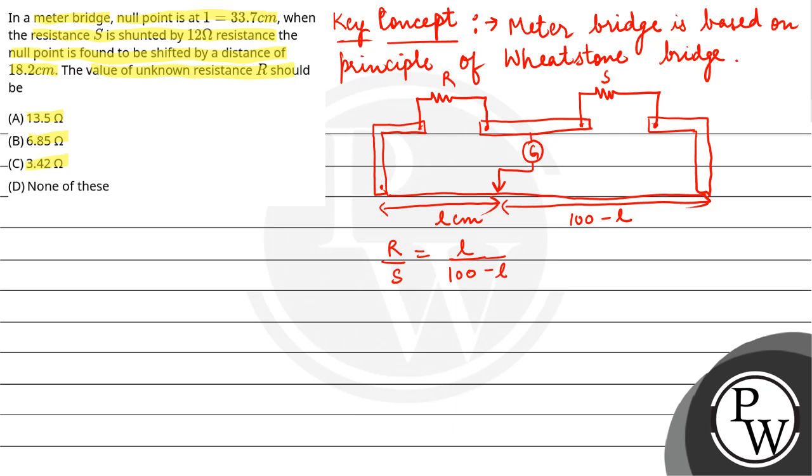That means, R by S equals 33.7 upon 66.3.